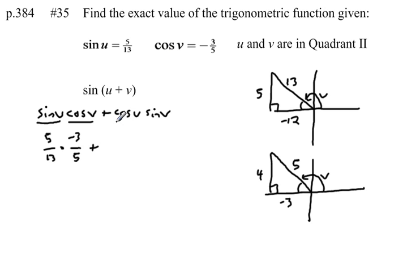Plus, now I need the cosine of u. So again, I'm looking at angle u, this top triangle. Cosine is adjacent over hypotenuse, which is negative 12 over 13.